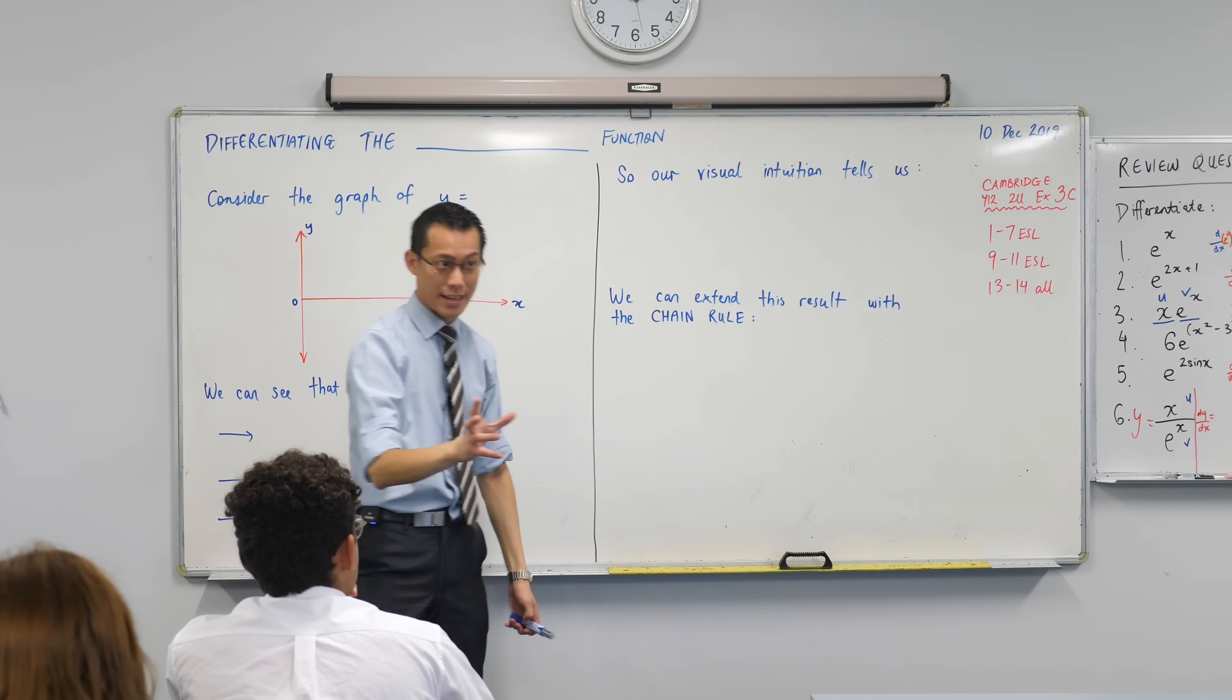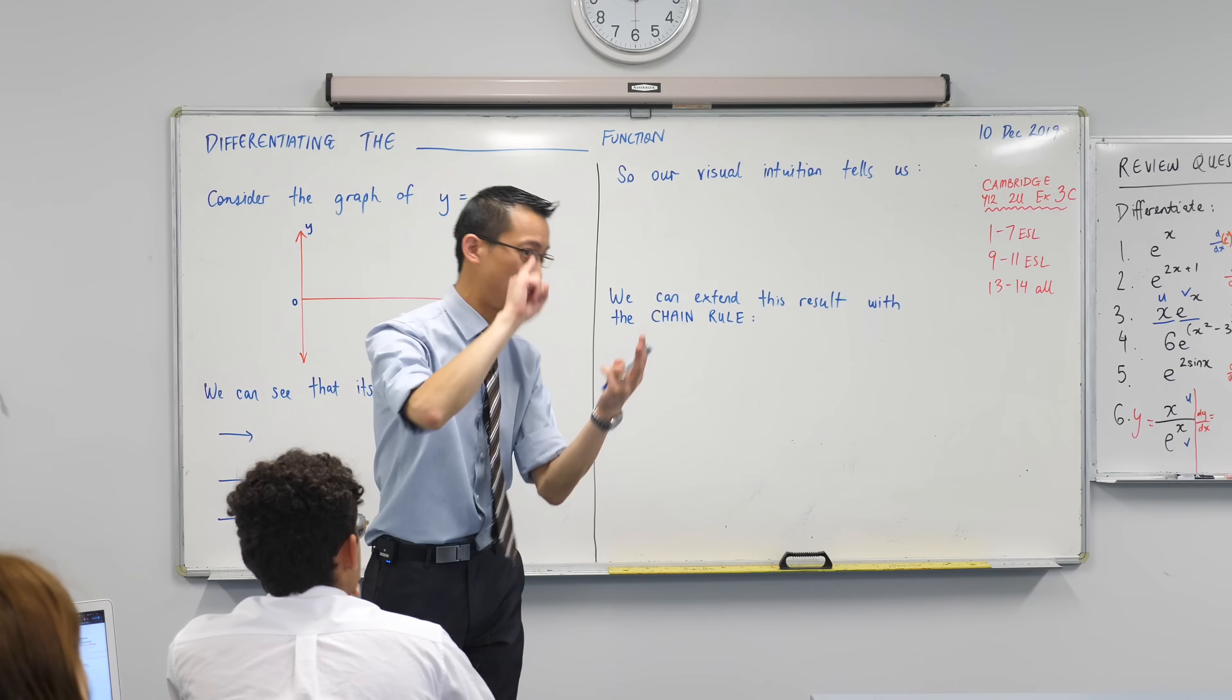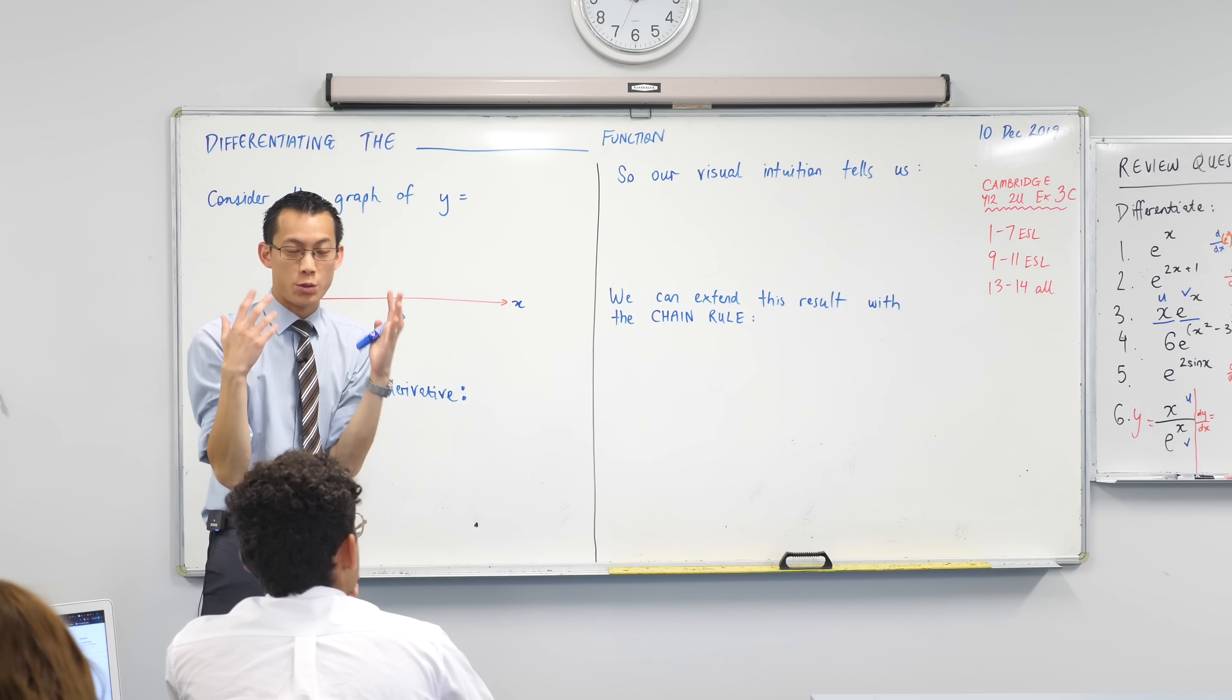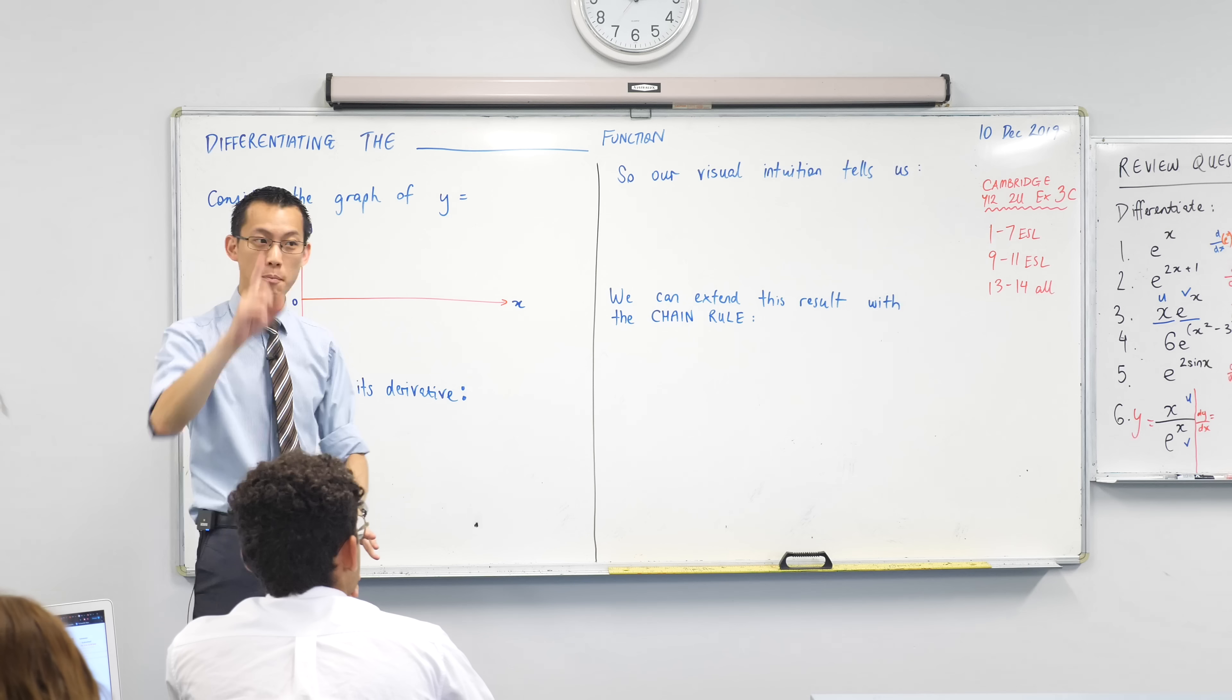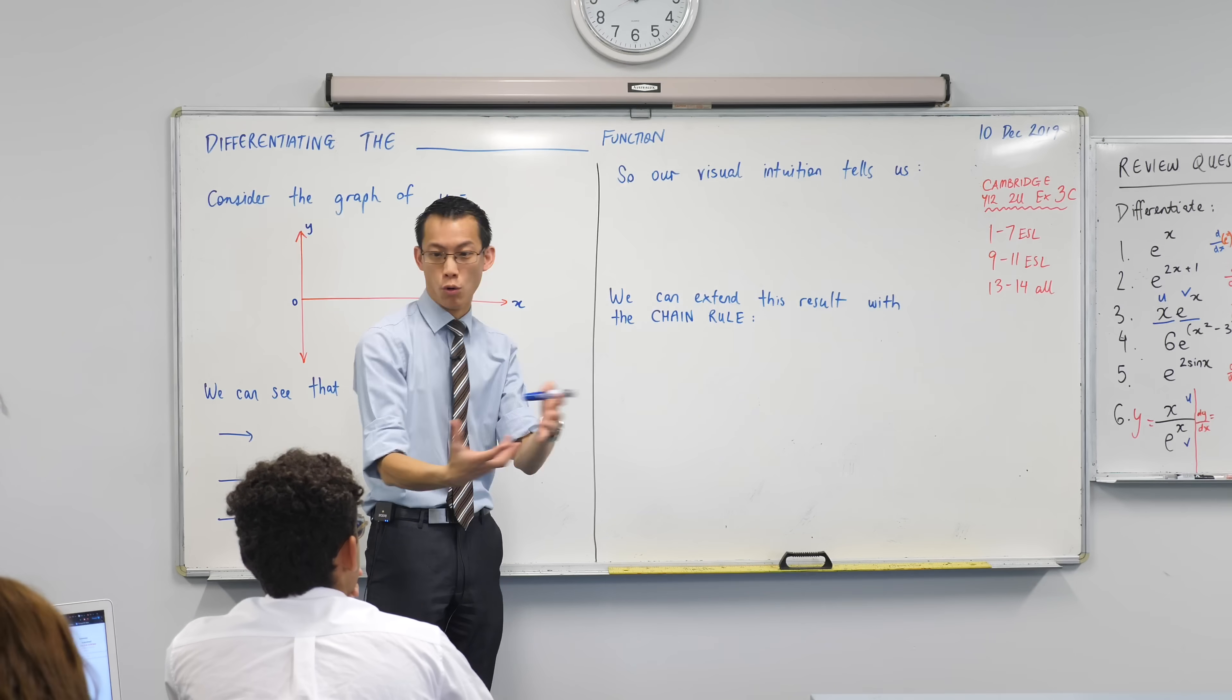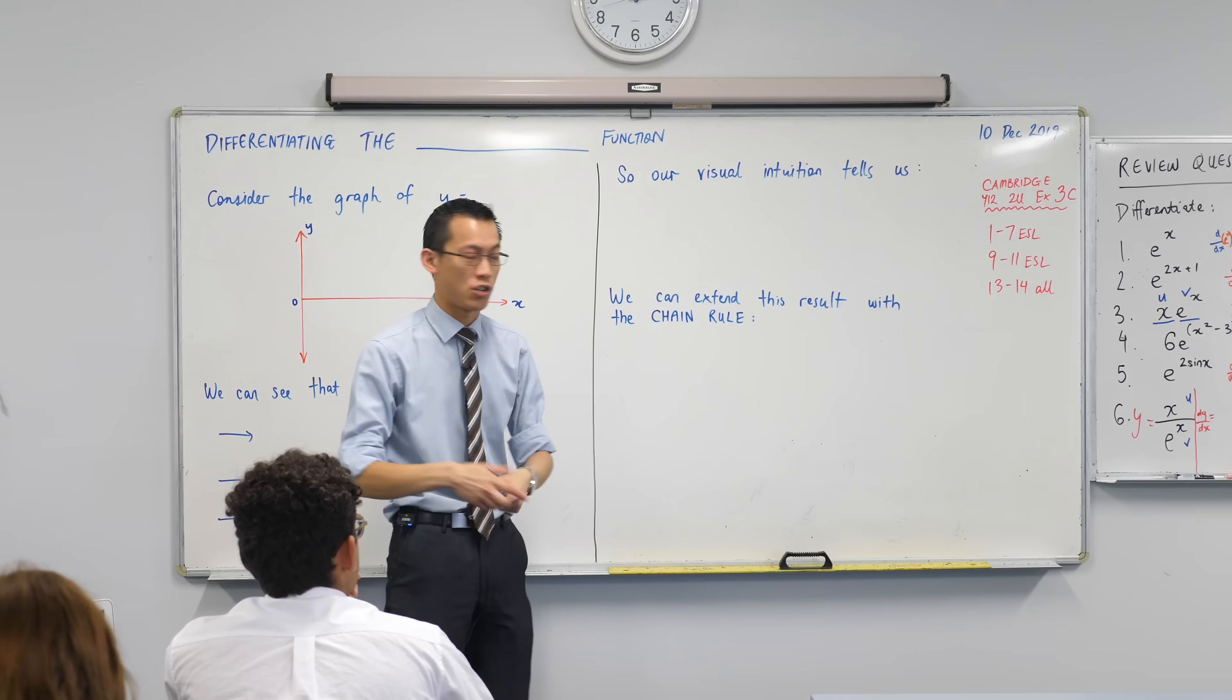A really important thing now that you know the product rule, the quotient rule and the chain rule - as you grow more and more rules it becomes just as important to be able to choose which tool is most appropriate in which situation.